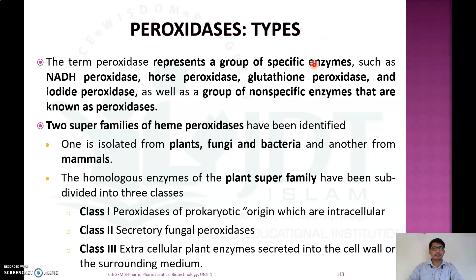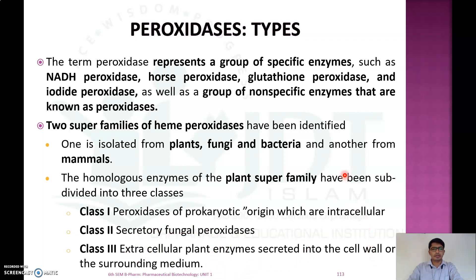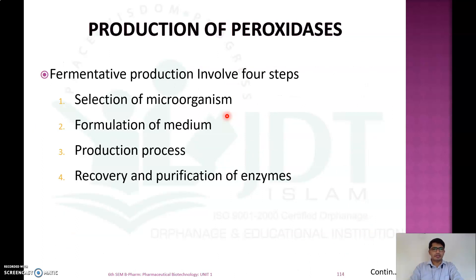The peroxidase term represents a group of specific enzymes such as NADH peroxidase, horseradish peroxidase, glutathione peroxidase, iodide peroxidase, as well as a group of non-specific enzymes. Two superfamilies of heme peroxidase have been identified: one isolated from plants, fungi, and bacteria, and another from mammals. The plant superfamily is subdivided into three classes: Class I (prokaryotic, intracellular), Class II (secretory fungal peroxidases), and Class III (extracellular plant enzymes secreted into the cell wall or surrounding media).